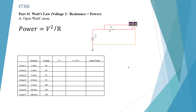Here we have a circuit with a 3-volt battery, 3 ohms, and our wattmeter. We're going to use the formula power equals V squared over R. V squared means V times V. So 3 times 3 is 9. Then V squared over R is 9 divided by 3, which is going to be 3 watts. We're going to confirm that with our power meter in Multisim.